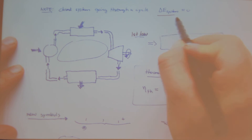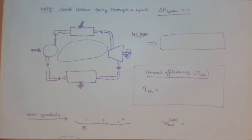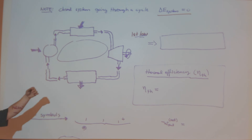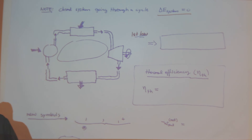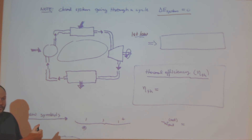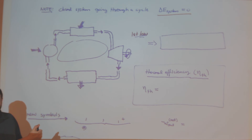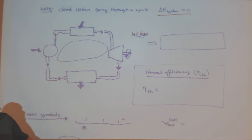For a closed system going through a cycle — which we discussed related to chapter four — if I go from one state to another and back again operating in a cycle, I return to the same temperature and pressure I started with. So the change in internal energy through a complete cycle equals zero.